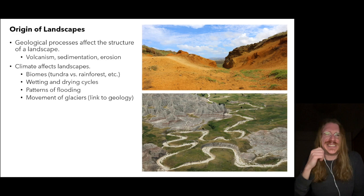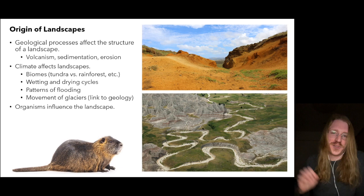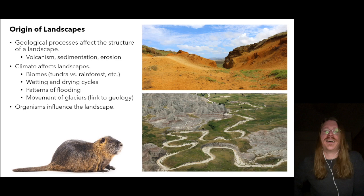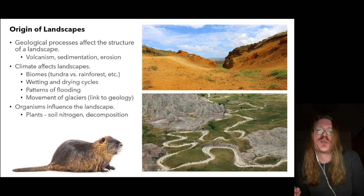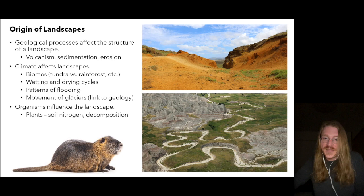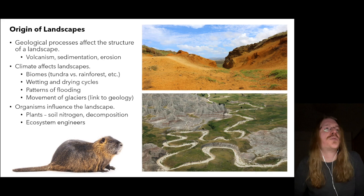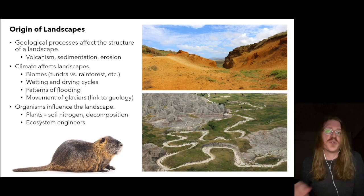Organisms — animals, plants, even bacteria and microbial mats — also influence their environment. At the most basic level, we should appreciate the role of the humble plant: they're not just primary producers, but also an important link to the nitrogen cycle and decomposition. So we have ecosystem engineers — not just ecosystem engineers, but landscape engineers.